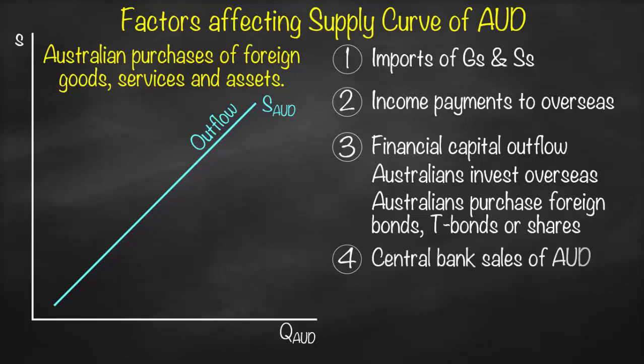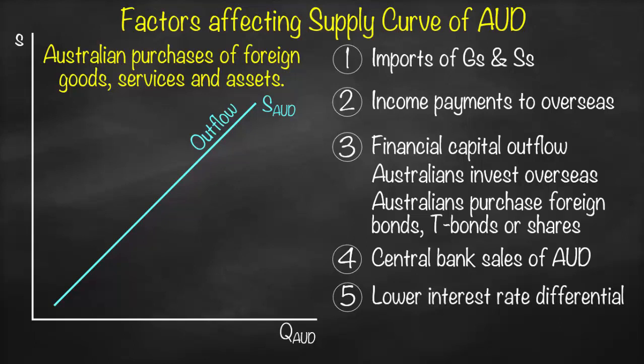Another example is the central bank selling Australian dollars. When the RBA sells Australian dollars, it's supply — it's cash outflow — and consequently affects the supply curve. A lower interest rate differential also affects supply: if Australia's interest rate is relatively lower than other countries such as Italy, Australians will prefer to move their money to Italy for a higher return. This is cash outflow and will shift the supply curve.